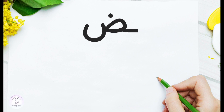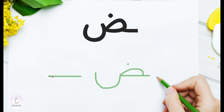In the final position, Ḍād keeps its complete form. We only add a connecting segment coming from the previous letter. Draw the connecting segment, then add Ḍād in its full shape to close the word — a connecting segment, then Ḍād.